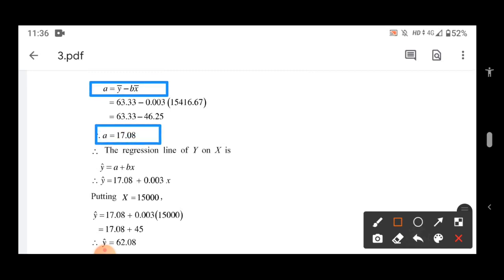After that, we have to write the regression line. The regression line of Y on X is y-cap is equal to a plus bx. So we got the regression line. Now in this, put x value as 15,000. What will y-cap be? y-cap is equal to 62.08. So when x is 15,000, y will be 62.08.